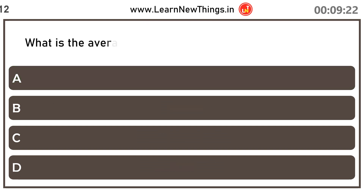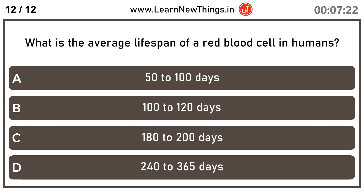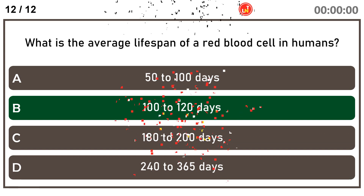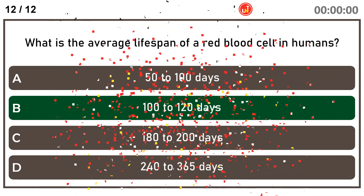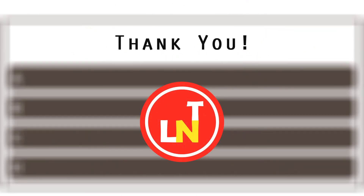What is the average lifespan of a red blood cell in humans? 120 days.